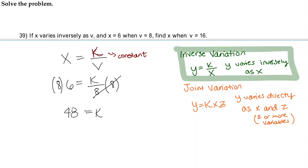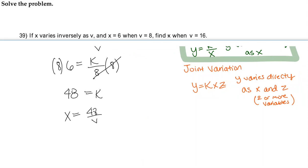Now when we plug this back into our formula, we have x equals k over v, but we have k equal 48, so we actually have x equal 48 over v. And now we can find x when v equals 16.